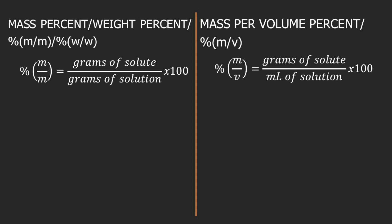Let's have a quick recap about mass percent and percent mass per volume. Mass percent is also known as percent by mass, weight percent, or percent by weight. Sometimes you can see symbols like percent mass over mass, or percent weight over weight — all of these mean the same thing. The formula for mass percent is grams of solute divided by grams of solution times 100. You can think of it this way: cent means 100, so percent means per 100.